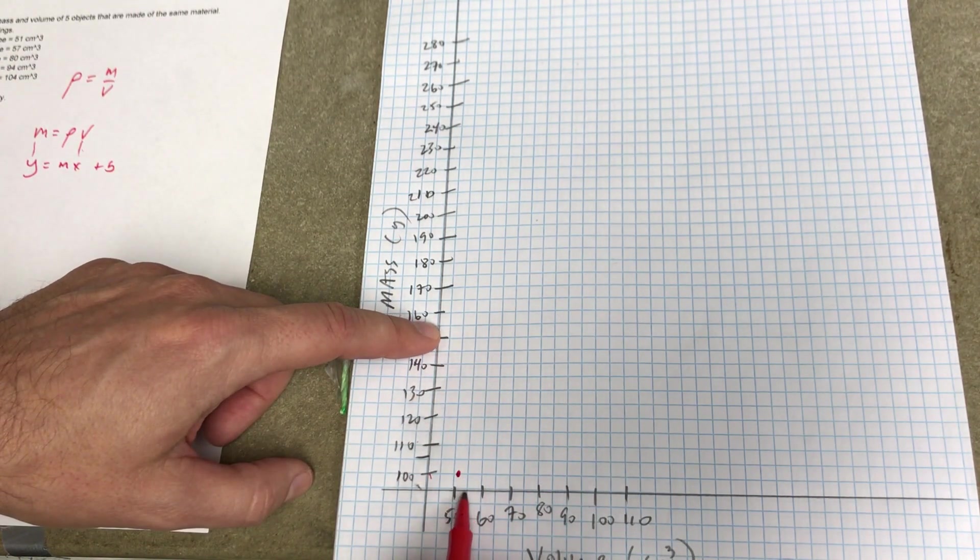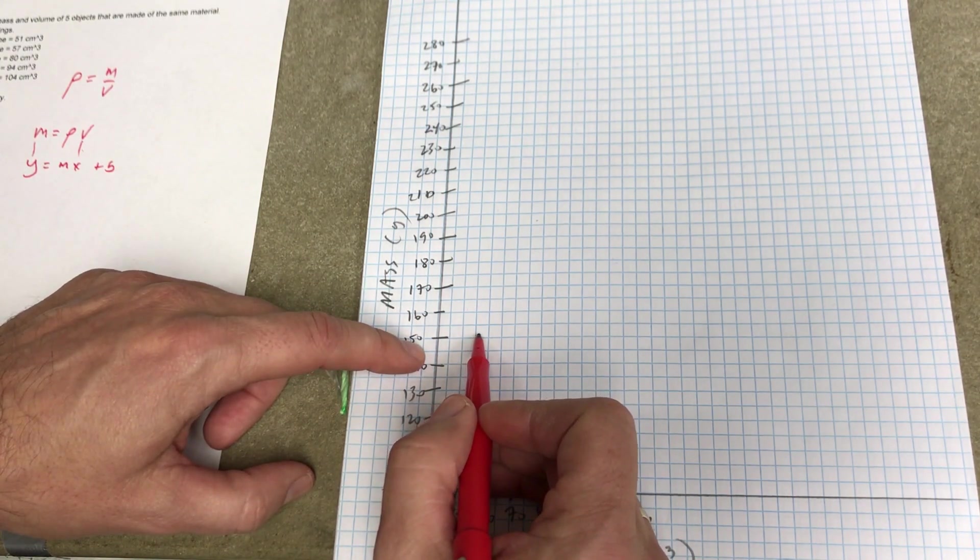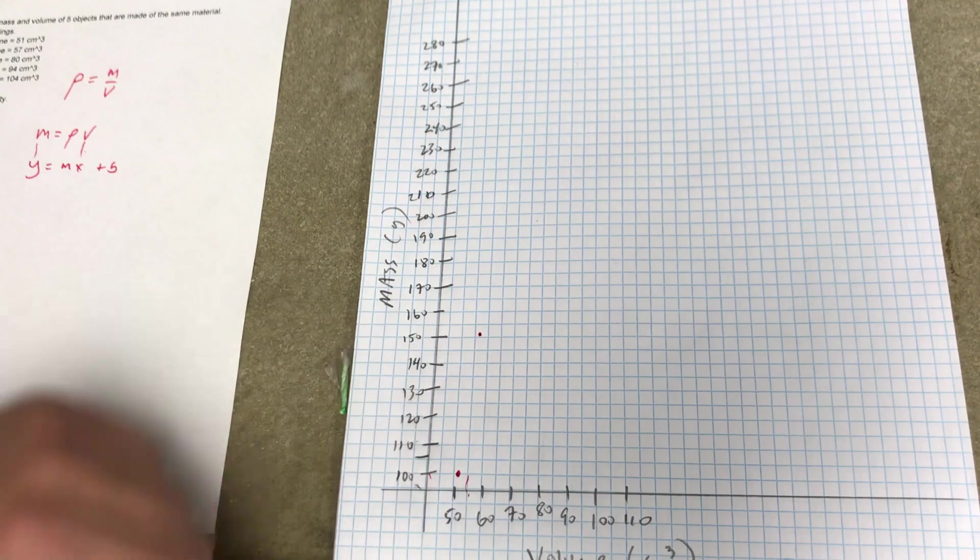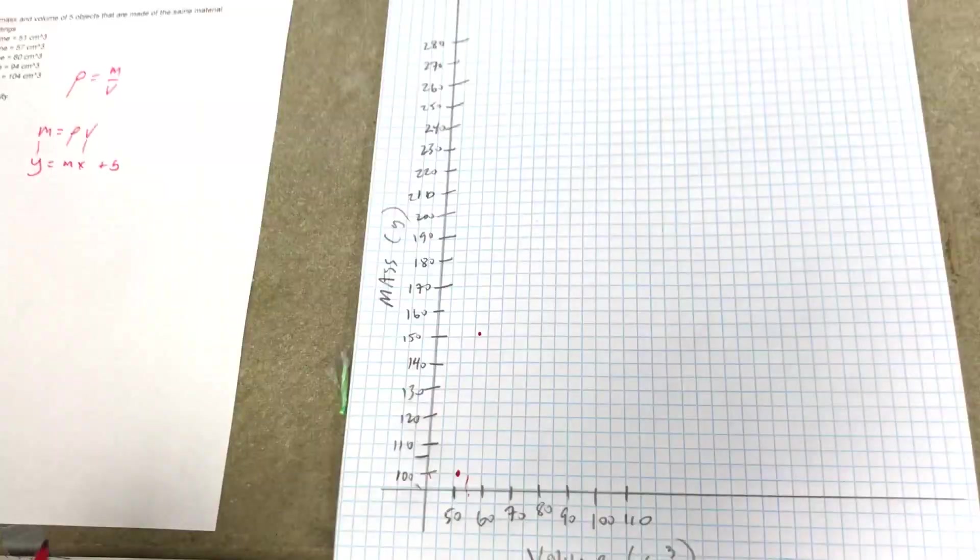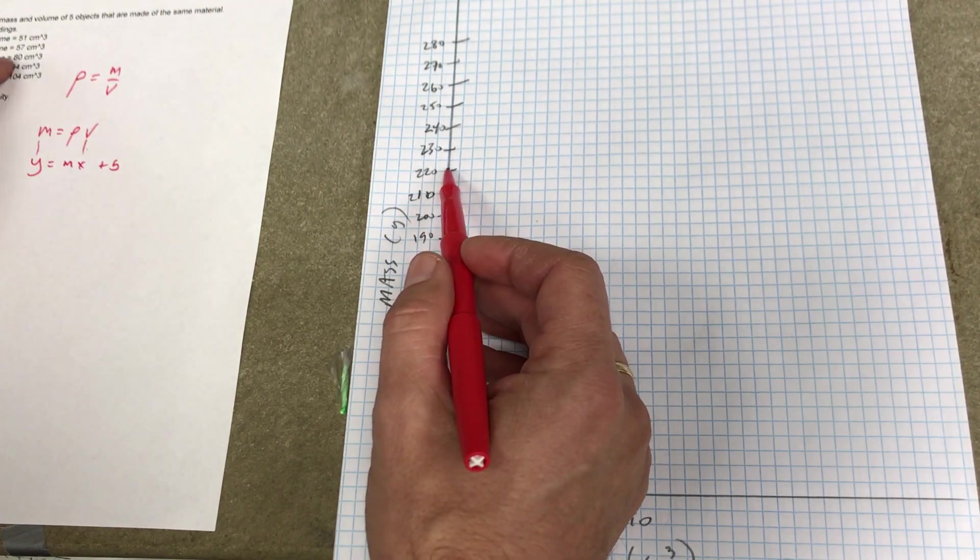So 50, that's a halfway point. 152 and 57, so it'd be about right there. Okay, now my next one's 222, it's way up here, and 80.